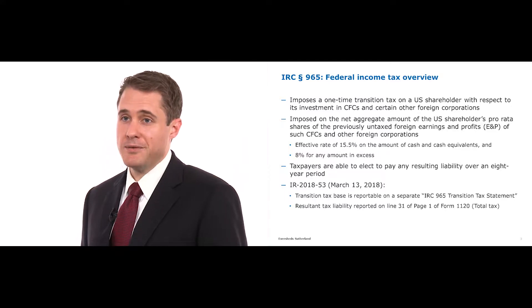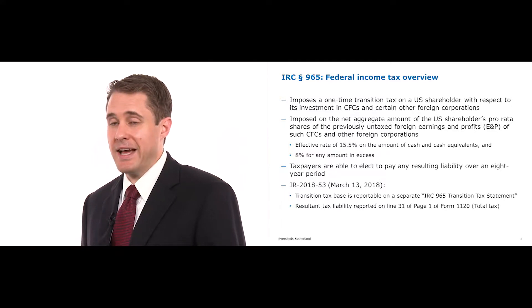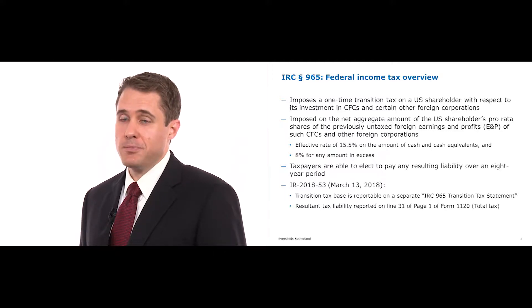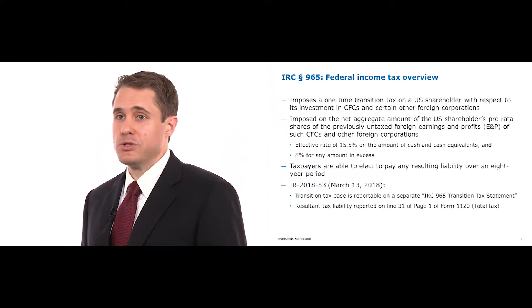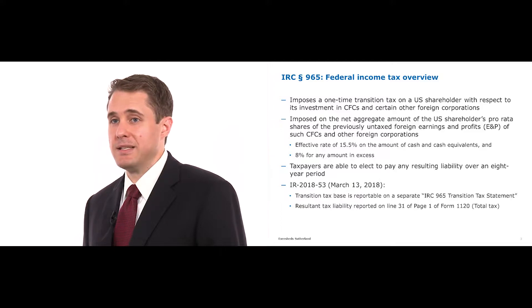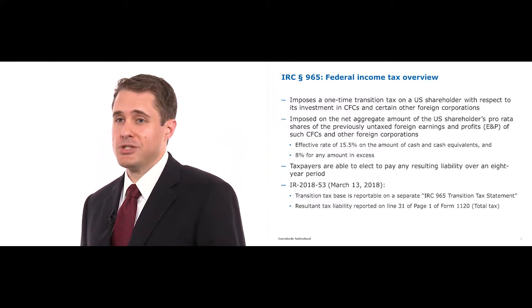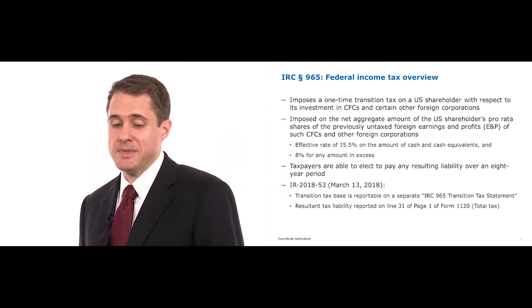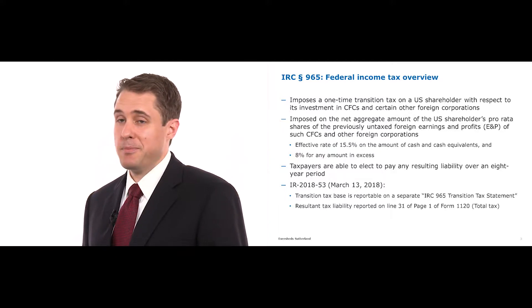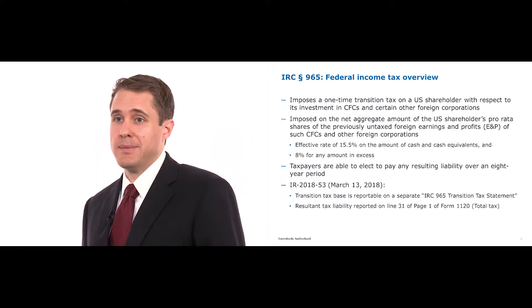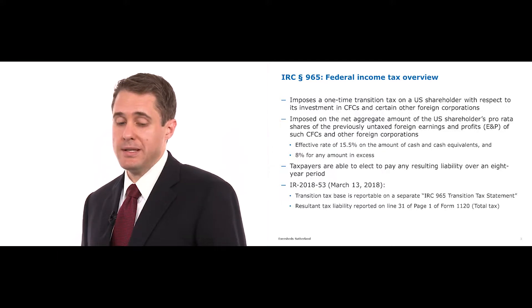A reduced rate of tax between 8% and 15.5% is applied to the inclusion. That's achieved by allowing a deduction for a portion of the inclusion under Section 965. The effective rate depends on the amount of cash and deemed cash equivalents held by the foreign subsidiaries. The tax can be paid in installments over eight years, with the payments backloaded to the later years.